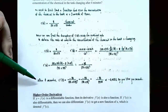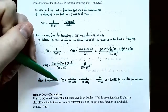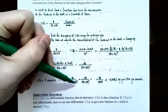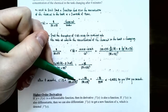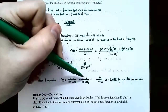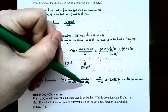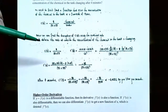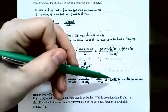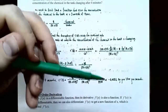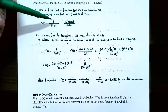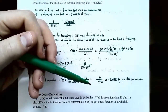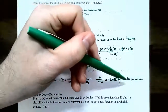To find the rate of change after 4 minutes, plug t equals 4 into the derivative. C prime of 4 is negative 40 over 50 plus 5 times 4, all squared. That's negative 40 over 70 squared, which is negative 40 over 4,900, or approximately negative 0.00816. The units for concentration were kilograms per liter of water, and since this is a rate of change, the units are kilograms per liter per minute.